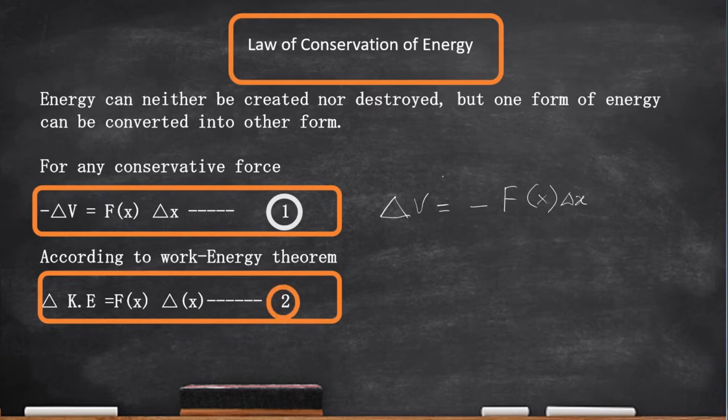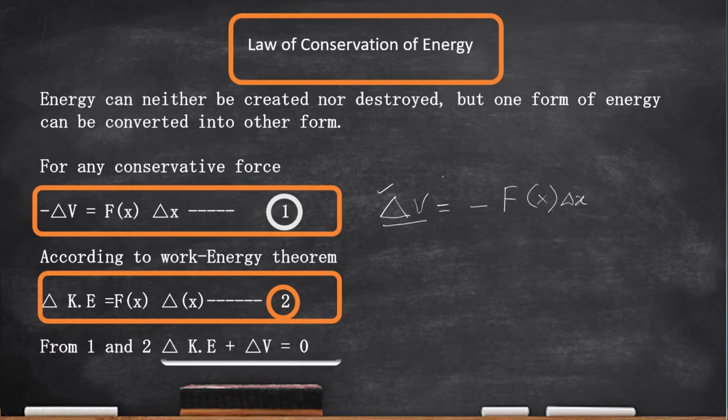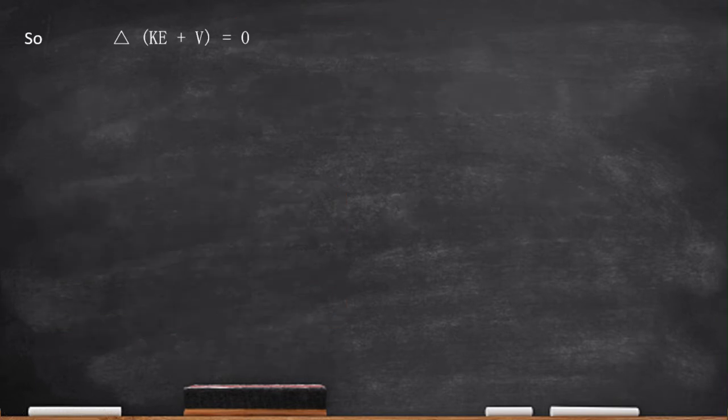If you add 1 and 2, we will get the change in kinetic energy and the change in potential energy is always equal to 0. That means, if you take ΔKE + V = 0, it clearly indicates that KE + V, that is potential energy plus kinetic energy, which is also known as mechanical energy, is constant.